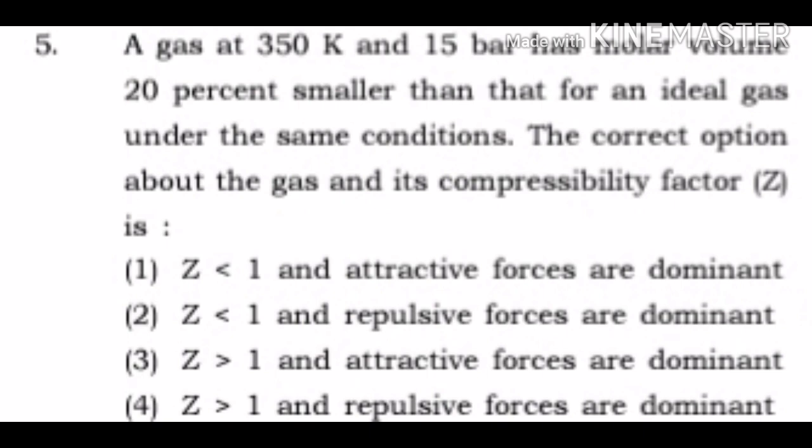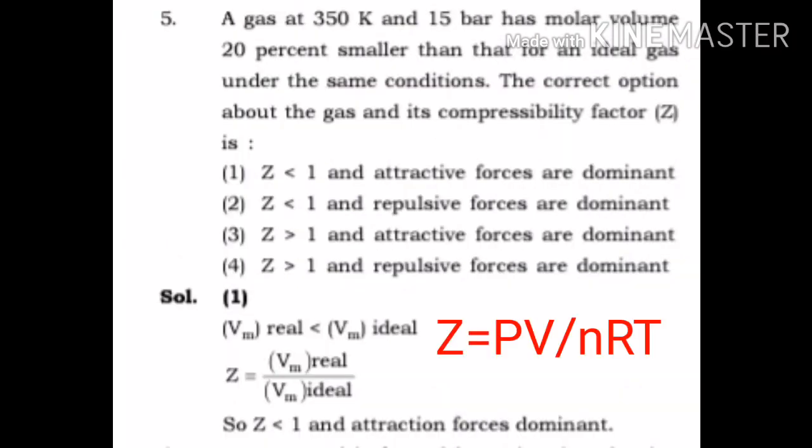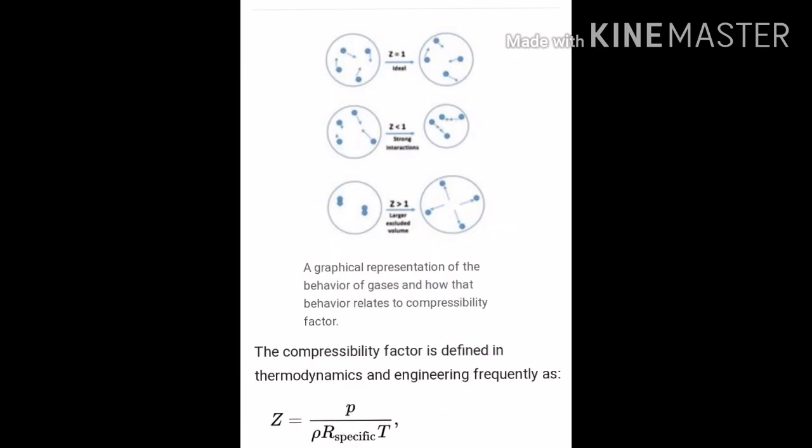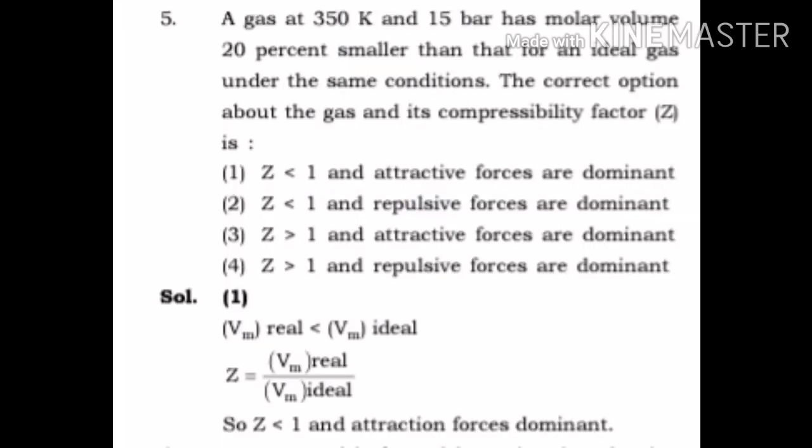This question is from the states of matter. Z equals PV by NRT. The compressibility factor is also defined as Z equals P by rho R specific T. Molar volume of real gas is always less than molar volume of ideal gas, so Z equals V real gas by V ideal gas. Therefore Z is always less than 1 and attractive forces are dominant.